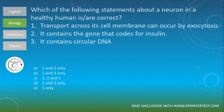Thank you very much Osher, and good luck. I hope we will be able to conduct another discussion session. Let's move to the second question of the day: which of the following statements about a neuron in a healthy human is or are correct? One: transport across its cell membrane can occur by exocytosis. Two: it contains the gene that codes for insulin. Three: it contains circular DNA. Answers: A — one and two only, B — one and three only, C — one, two and three, D — two and three only, E — one only.